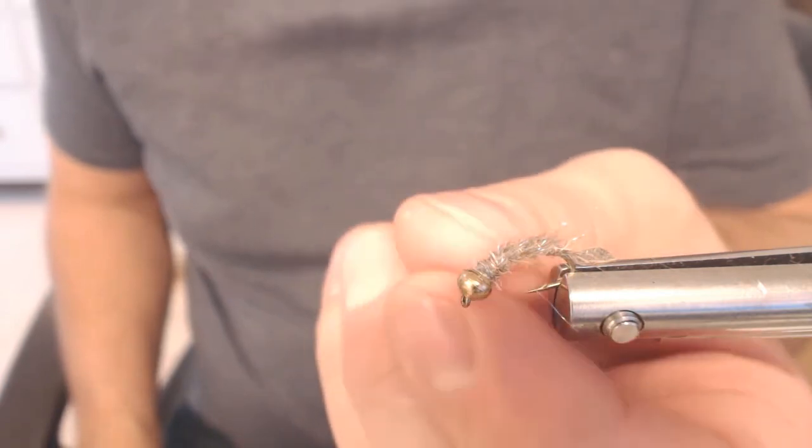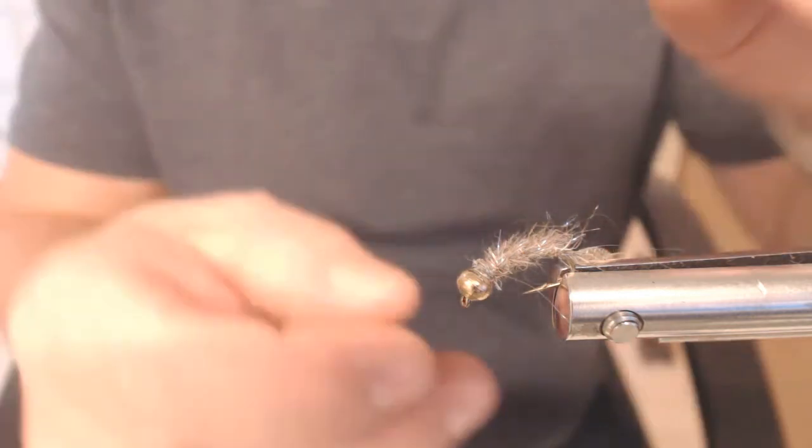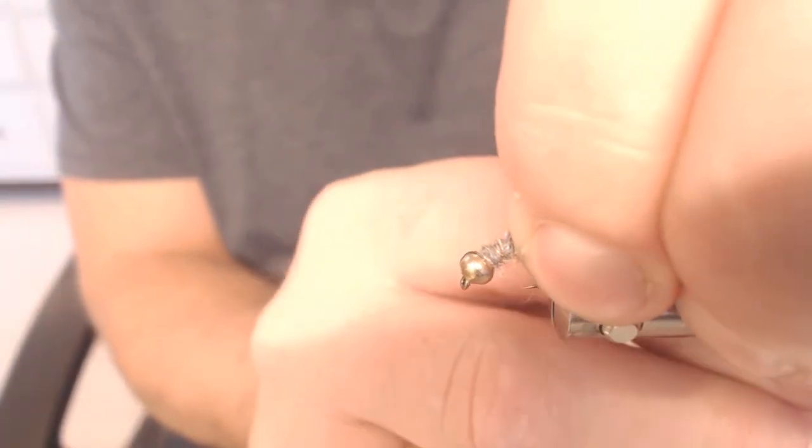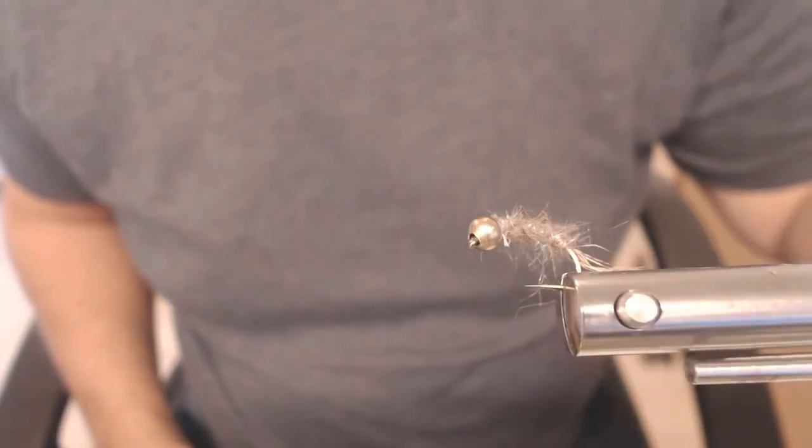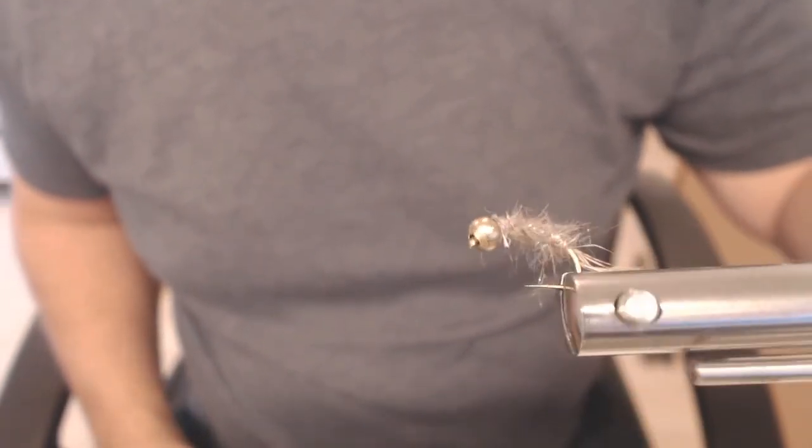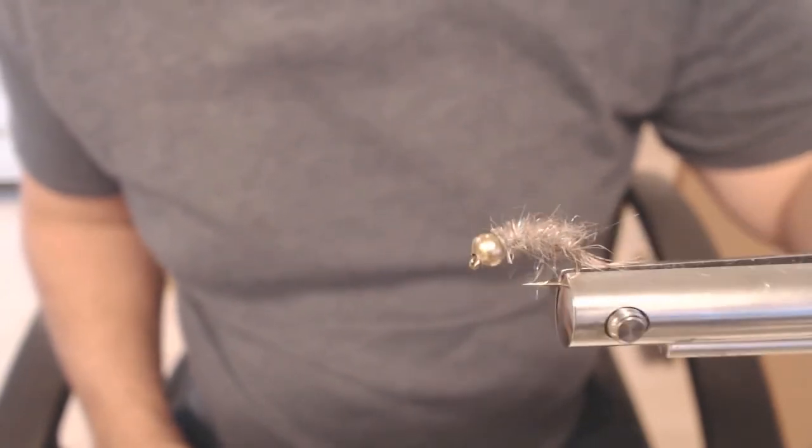Da er denne flua ferdig. Og klar for å gi seg kast med de store øretene. Sånn ser den ut. Det er en helt enkel flue. Den går dypt. Fisk er utrolig bra. (Then this fly is finished. And ready to cast for the large trout. That's how it looks. It's a very simple fly. It goes deep. Fishes incredibly well.)